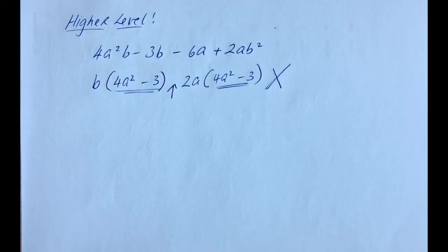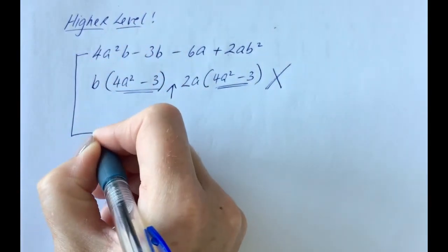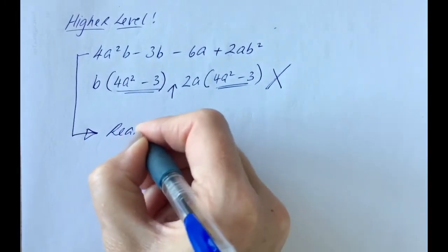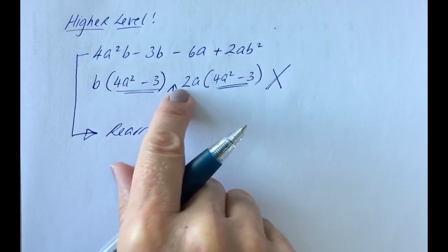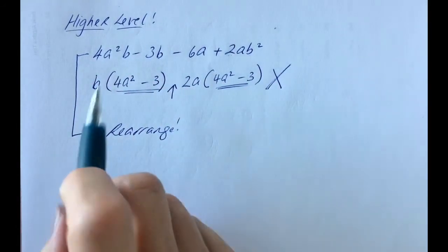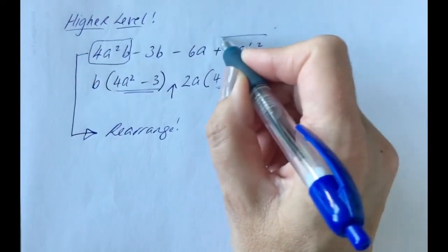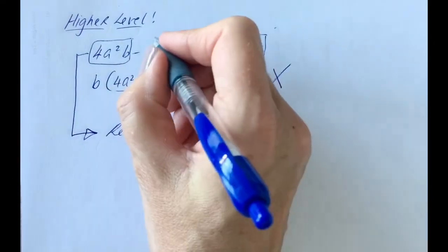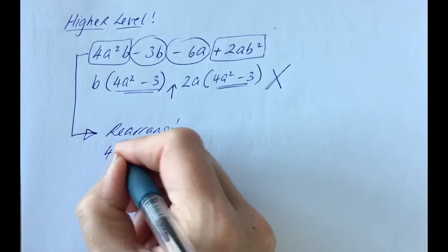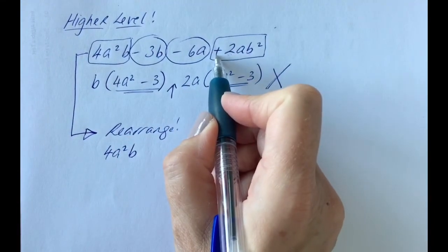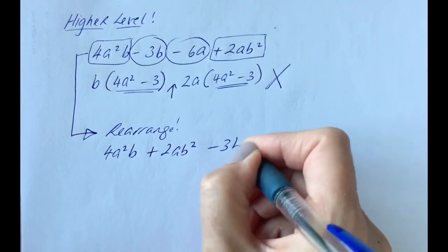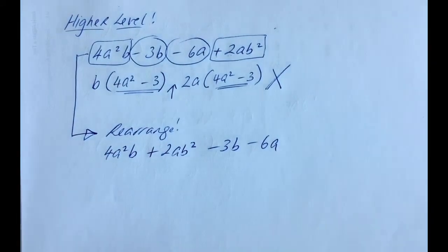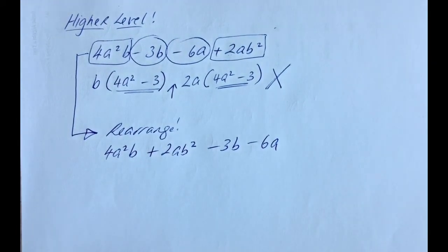If we do a little rearranging, we might be able to pull out common factors and group them properly. The way it's currently laid out, we're unable to group them correctly. So I'm going to rearrange: put 4a squared b together with plus 2ab squared, then the minus 3b and the minus 6a. Always be mindful of the sign to the left — that's really important, it always goes with the term.